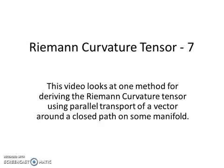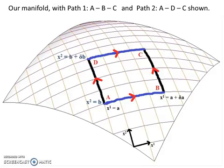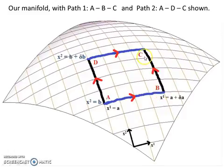In this video we are going to have another look at the Riemann curvature tensor and another method for deriving it. We have some manifold, the coordinate lines x1 and x2 are marked on it. We are going to parallel transport some vector v around a closed path, first along pathway 1, a to b to c, and then we will parallel transport it from a to d to c and compare the changes at the end.